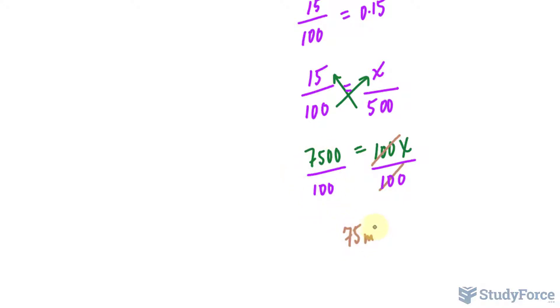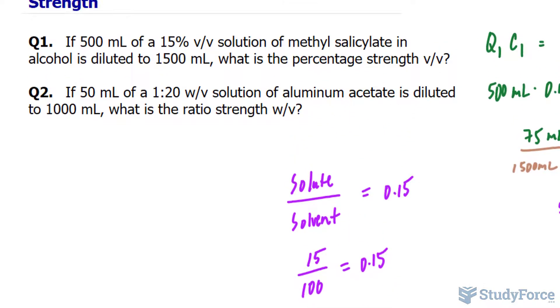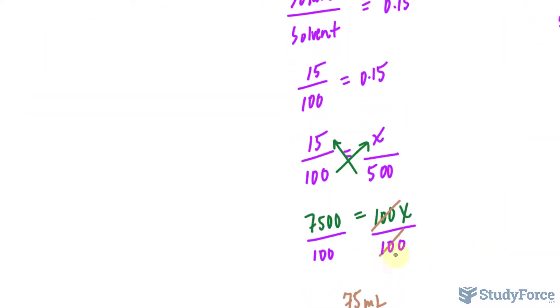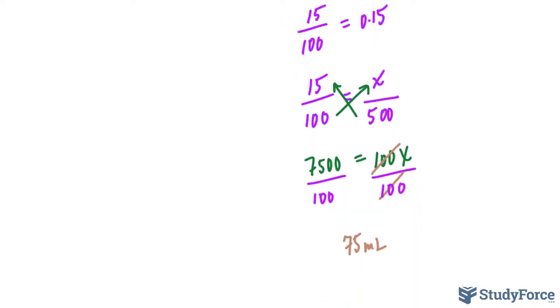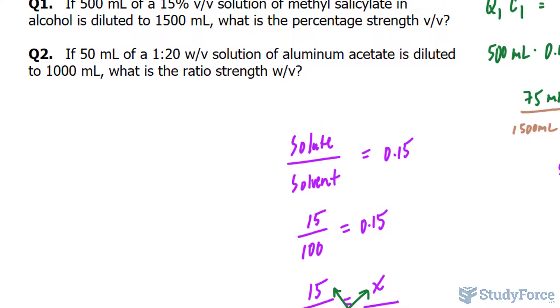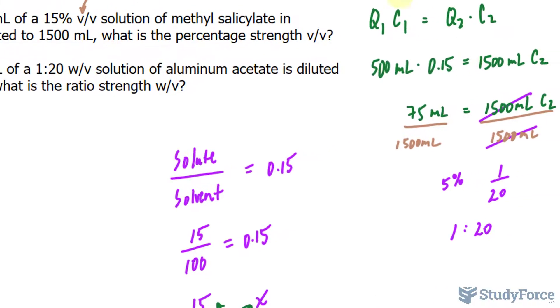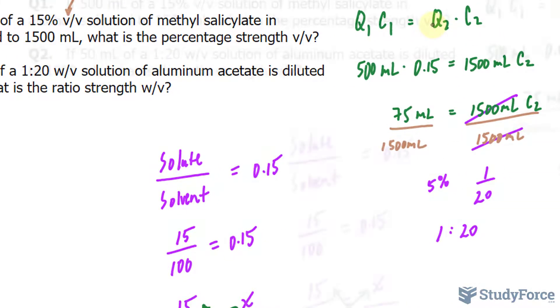So 75 milliliters, and I'm using milliliters here because we're talking volume per volume, and usually volume, the units are in liters. So 75 milliliters of methyl salicylate were applied to 500 milliliters of solvent, and that in turn was diluted to 1500 milliliters, and we use the following equation to find out its percentage strength after.